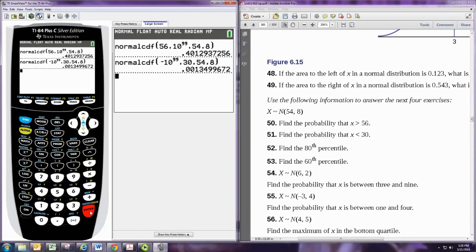Let's skip ahead to problem 54. In 54, the mean is 6 and the standard deviation is 2, and we want the probability that x is between 3 and 9. This is the last situation, finding the probability that x is between two numbers.